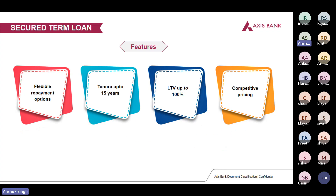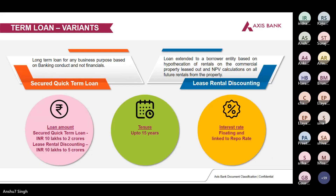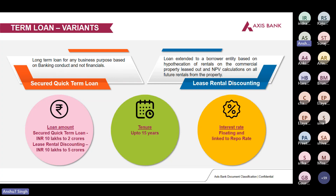Features of secured term loan: flexible repayment options, tenure up to 15 years, LTV up to 100%, and competitive pricing. We have two variants of term loan. First is secured quick term loan (SQTL): long-term loans given for business purposes where assessment is done based on banking conduct — we are not asking the customer for their financials. Second is LRD — lease rental discounting: a loan extended to a borrower on hypothecation of their rentals on commercial property.